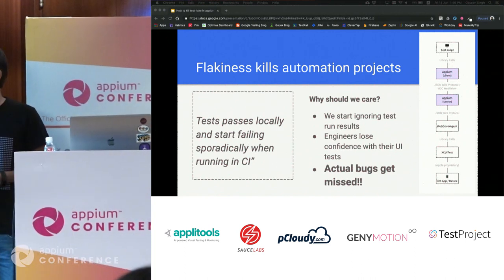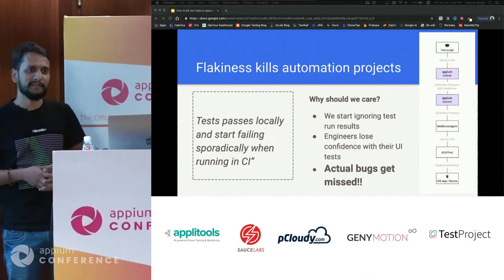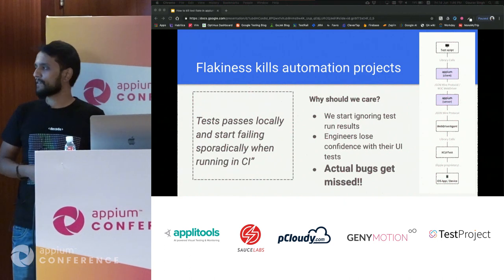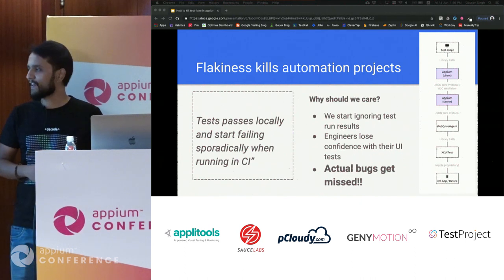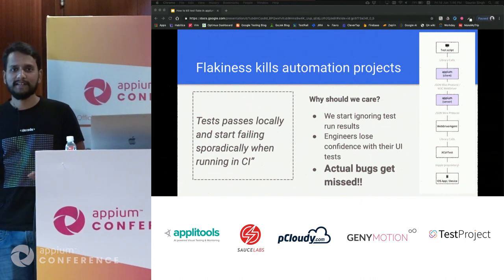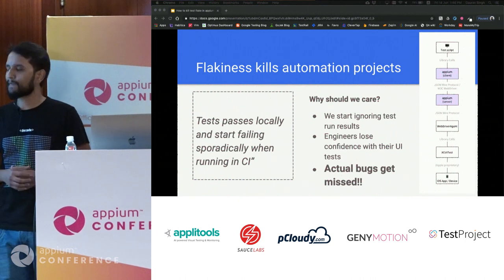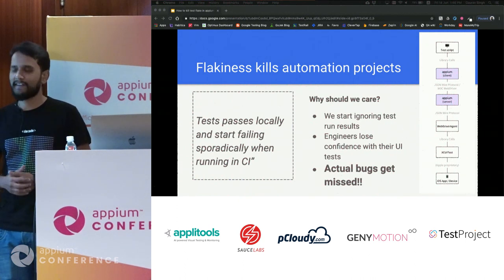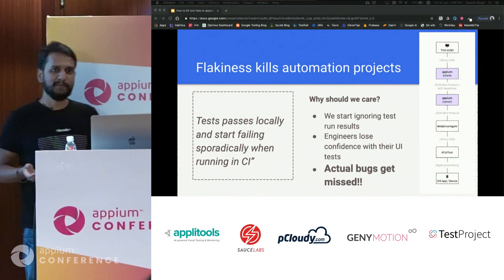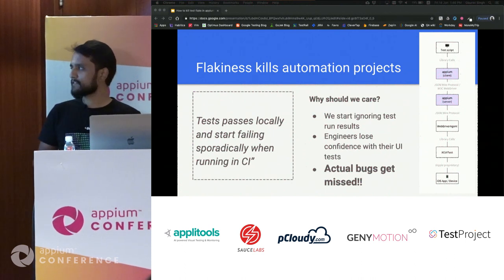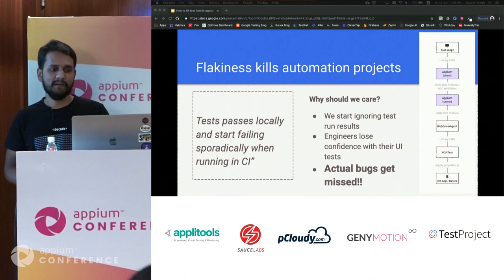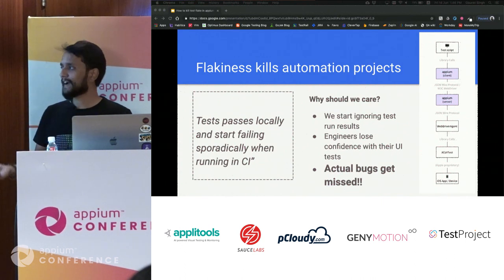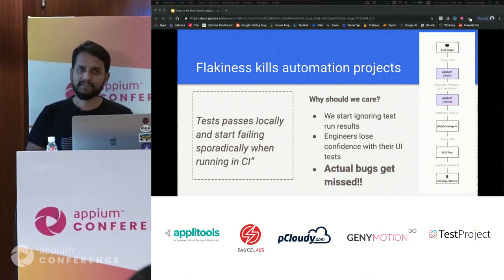Does this scenario seem familiar? You code your test in your local environment, it works perfectly, you push it into your CI environment — either Jenkins, GitLab, whatever — and then you start seeing some tests failing sporadically. They pass sometimes, they fail sometimes, and you can't even make out why. It's a mystery, but it actually points to deeper problems with how you've written your framework, or even issues with the app itself.